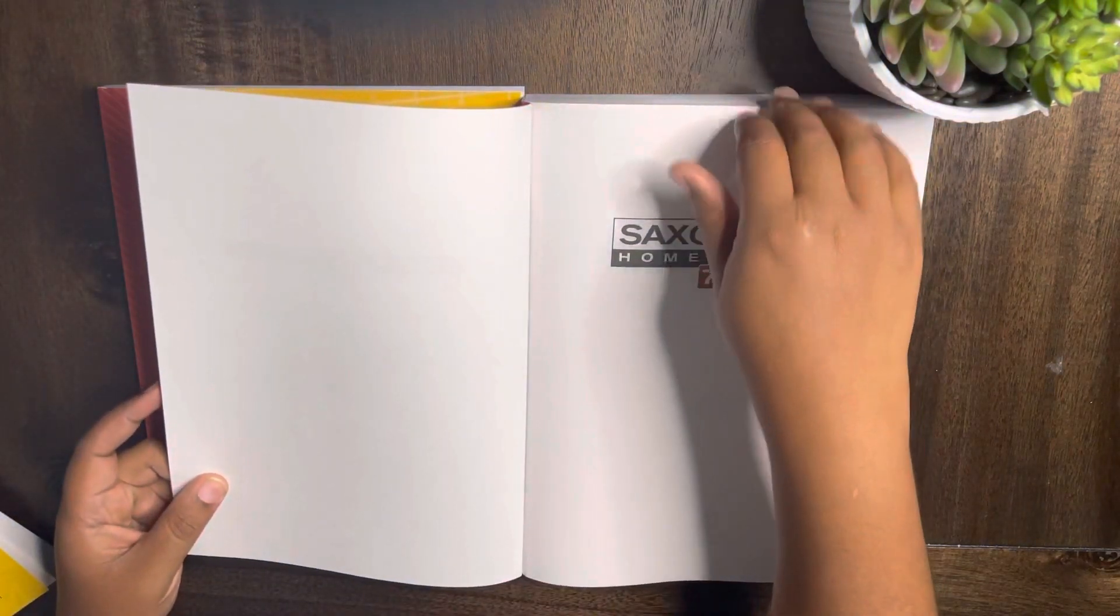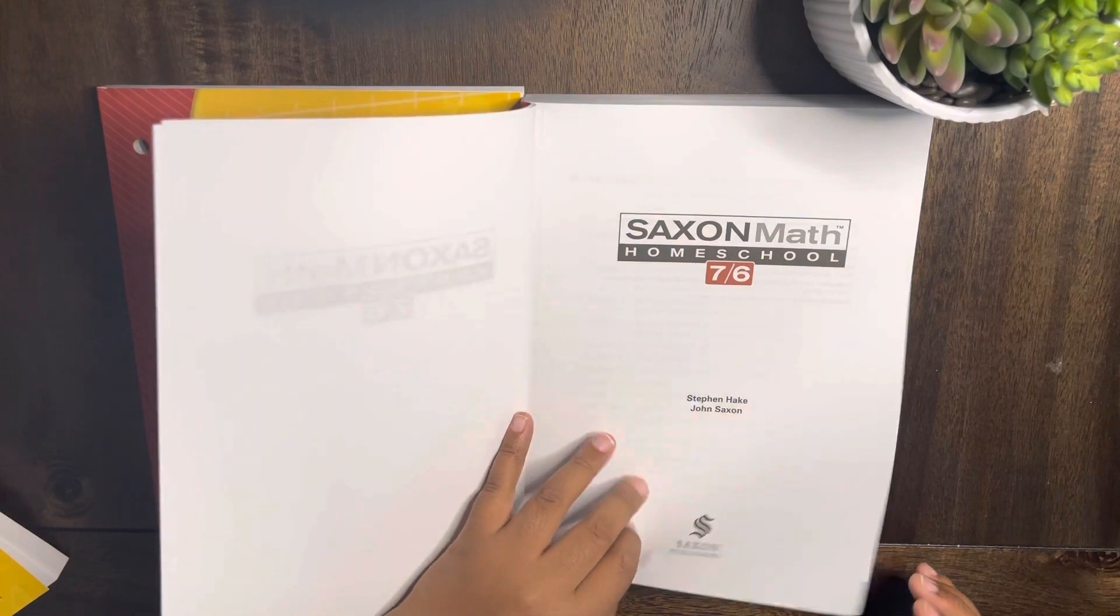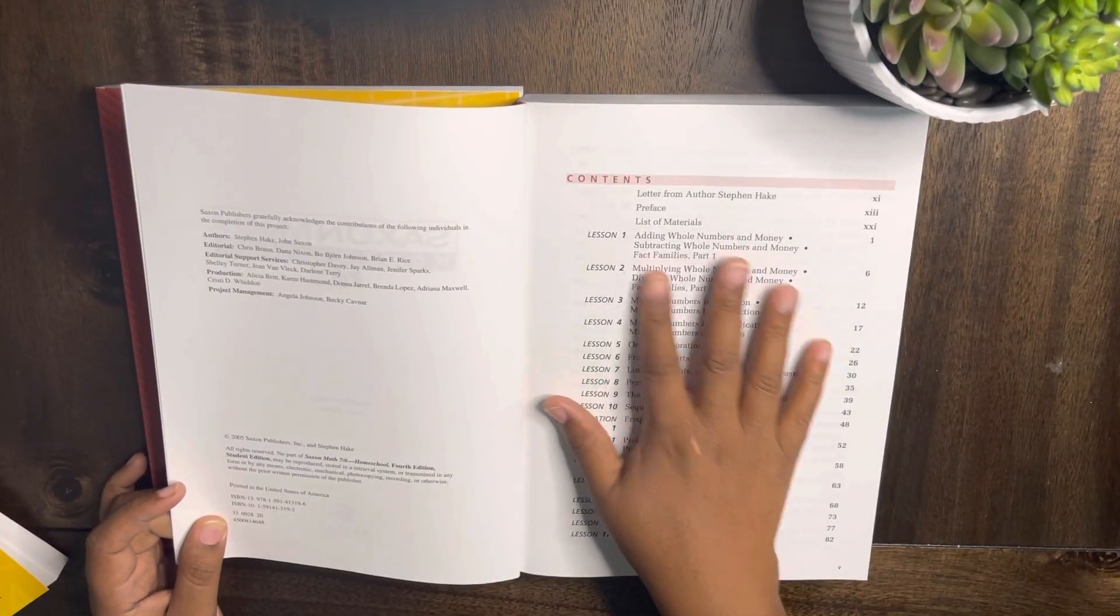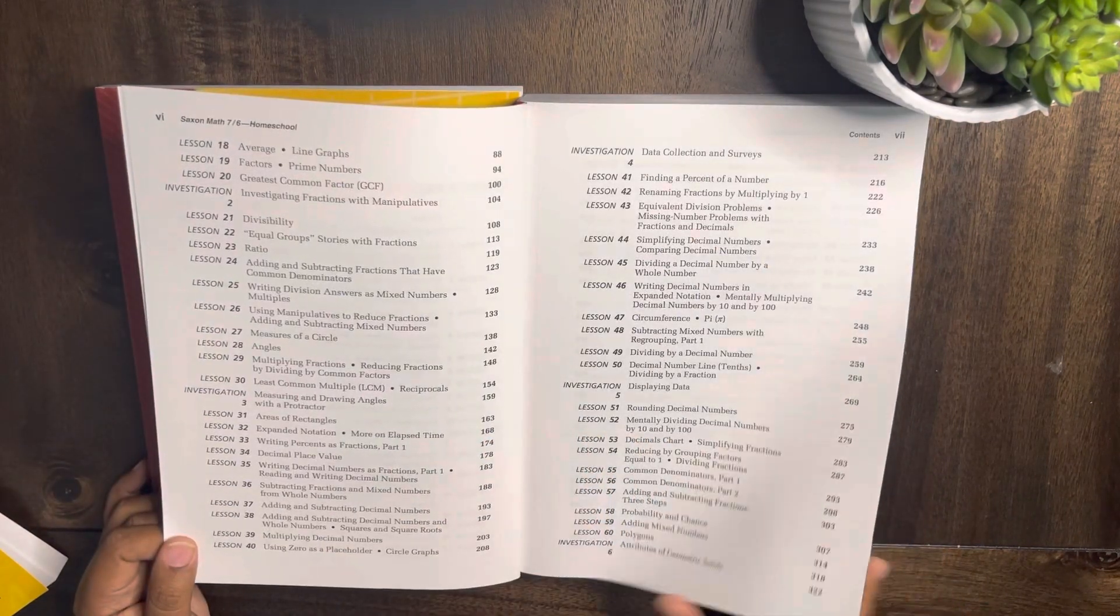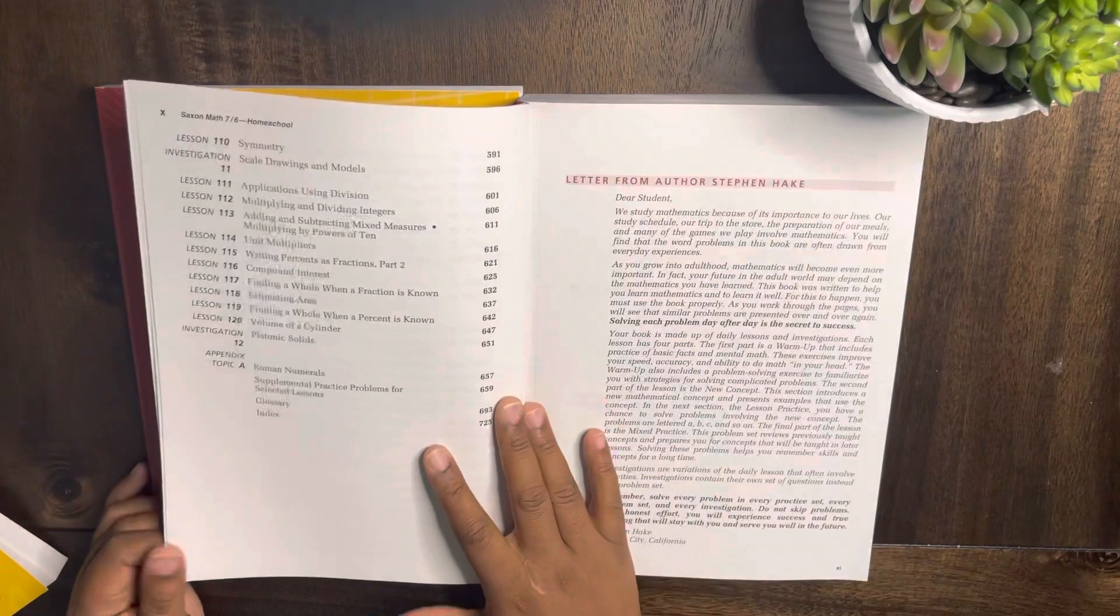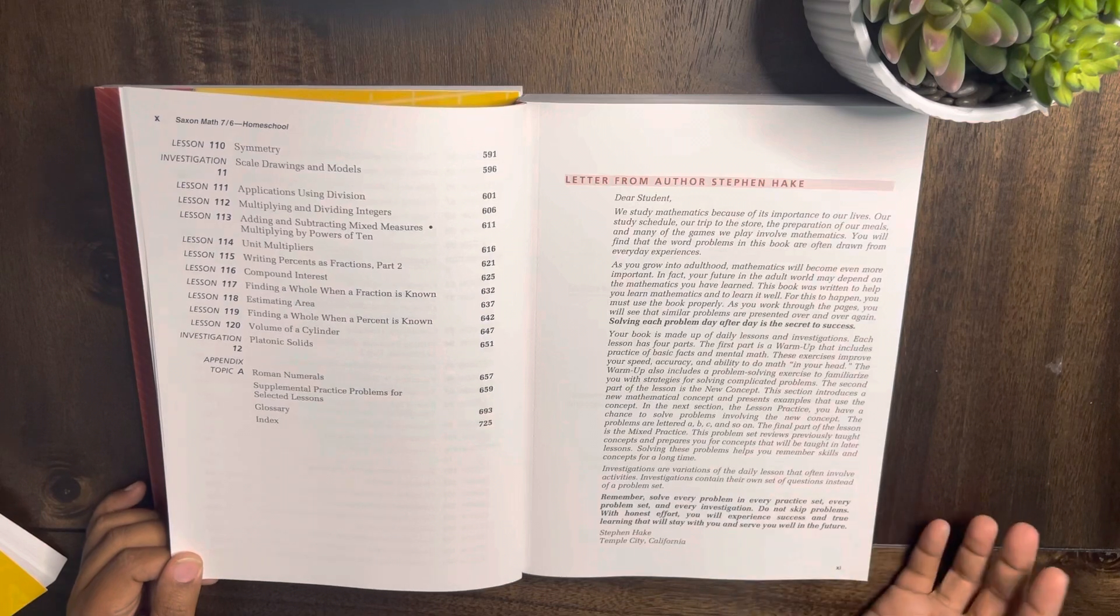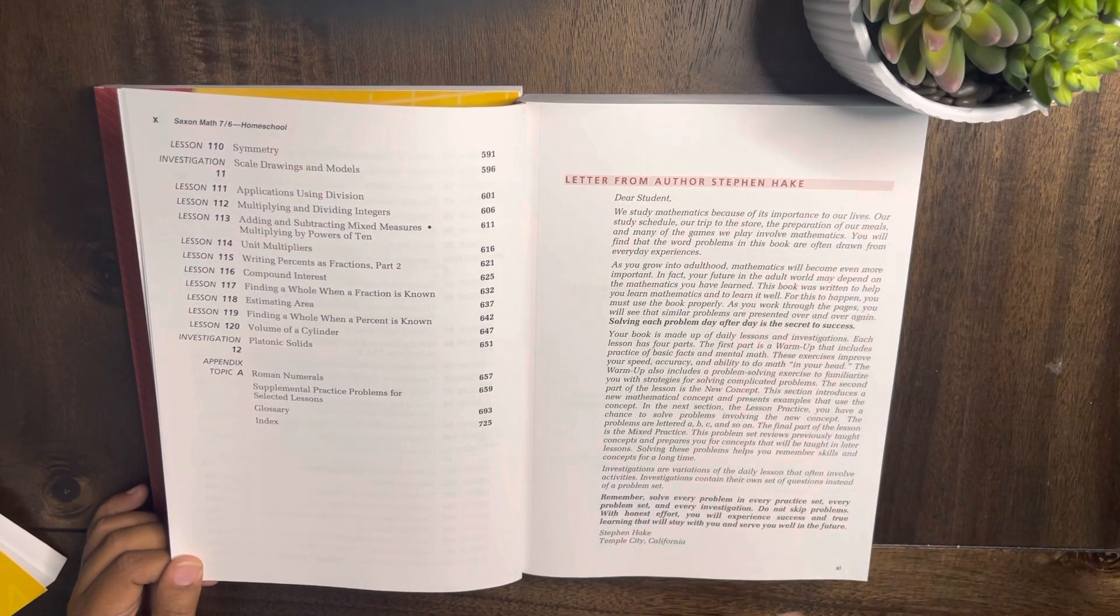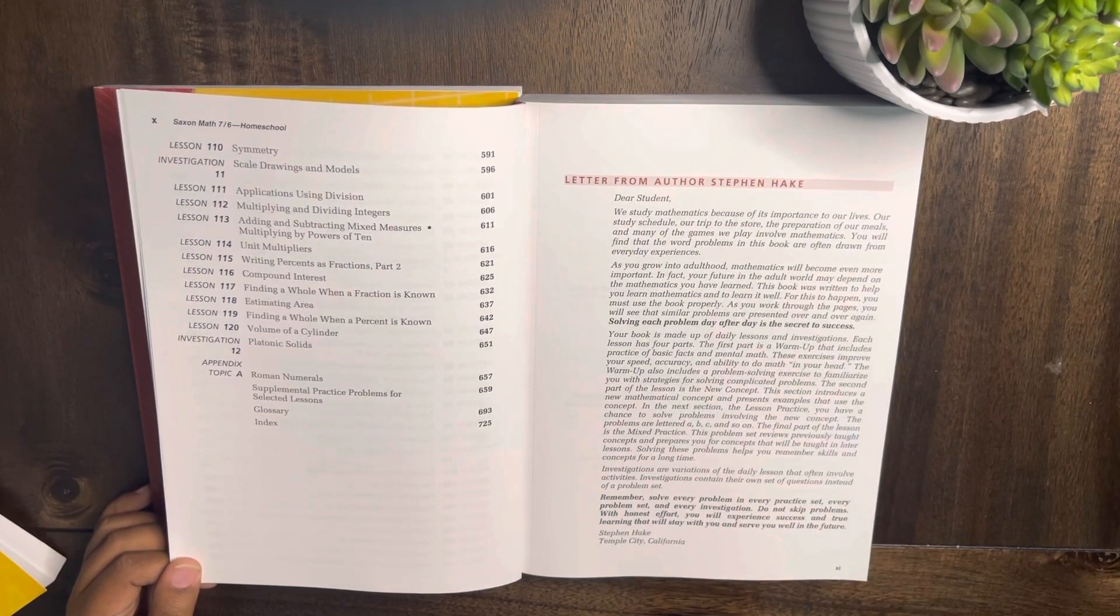If we open up the book, let's take a look. It starts with the contents, and there are a total of 120 lessons and there's 180 days, so you can kind of take your time.